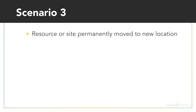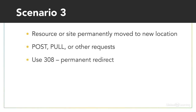Which brings us to the final option: 308 permanent redirect. This code works like 307 by preserving GET and POST requests, but indicates a permanent redirect in line with 301. So what's the difference between 301 and 308? A 301 redirect implies the browser should pass the intent of the request to the new location, be that GET or POST or anything else. But in many cases, browsers convert the request to a GET request — meaning if the user filled a form and then hit a 301 redirect, they are redirected and have to refill the form. A 308 redirect must perform the same request exactly, so if a form was filled, the POST request is forwarded to the new domain.